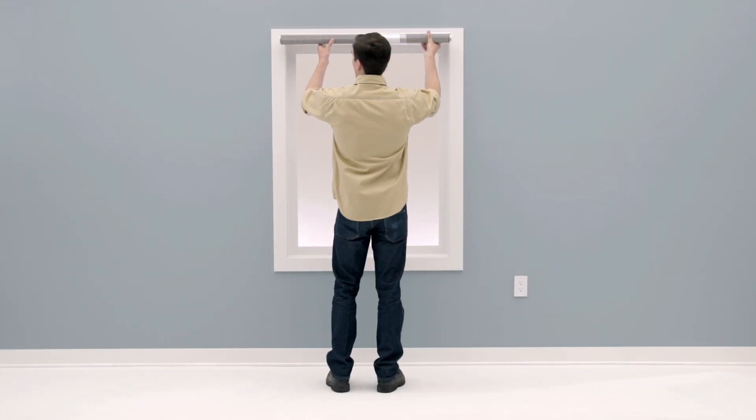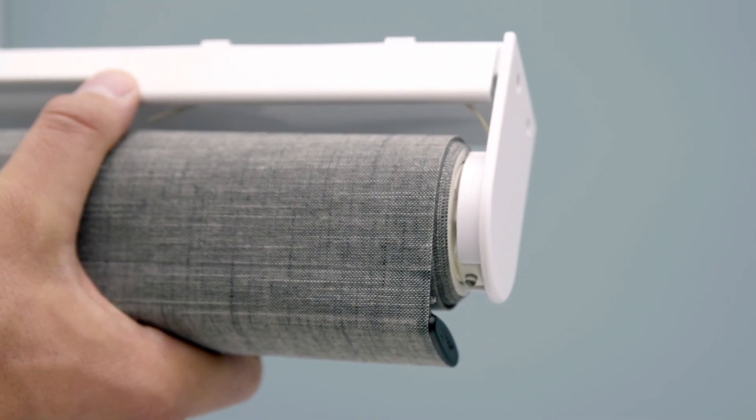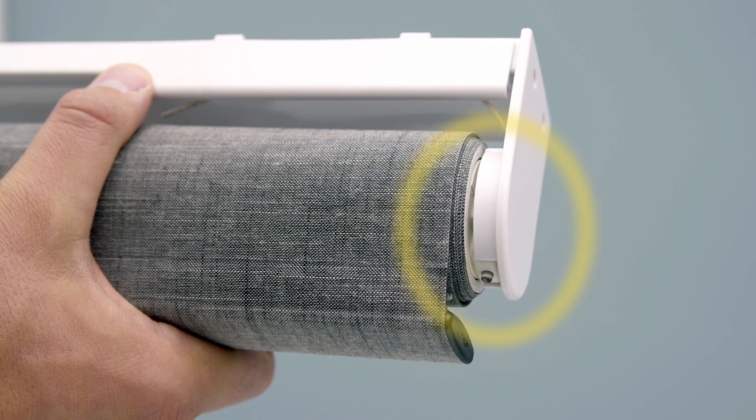Hold the shade up to the window to make sure it is the correct size. Next, make sure that the ends of the shade tube are properly inserted into the end brackets.